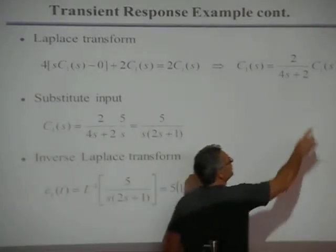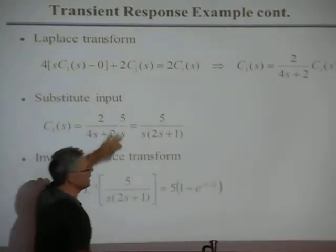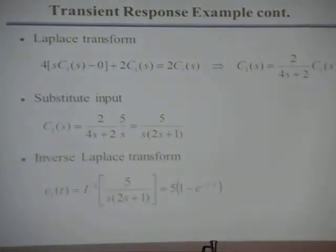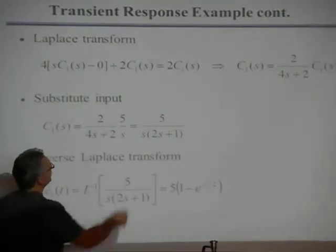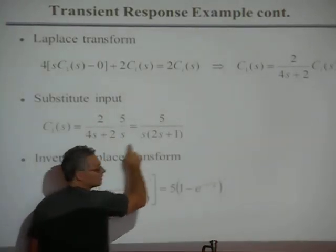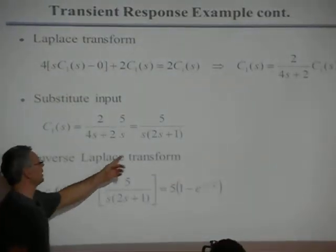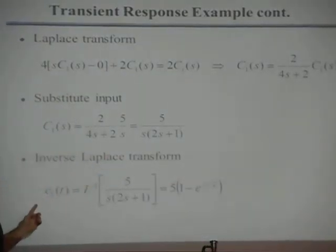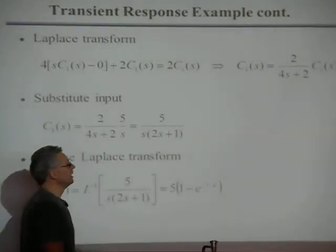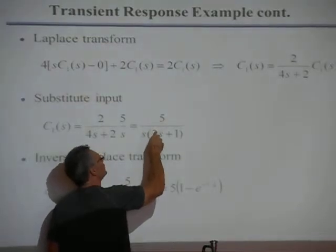Now you can substitute in what the function is for ci of s. On the previous page, I told you that was 5 over s. That gives you a function that looks like this. All I did here is just divide both sides of the equation by 2. The reason I want to do that is because I know terms like this are in the table. I still have to take the inverse Laplace transform to find the answer, and I know terms like this are in the table.